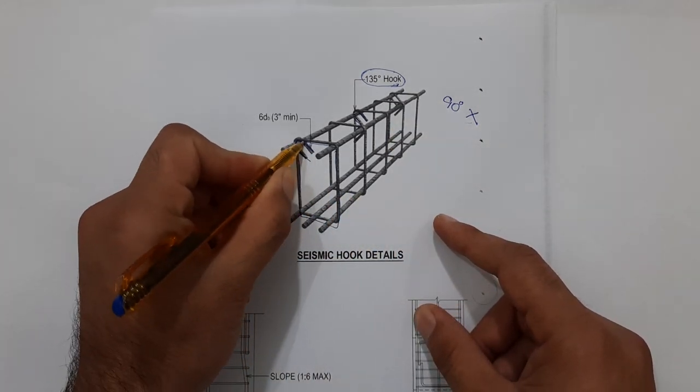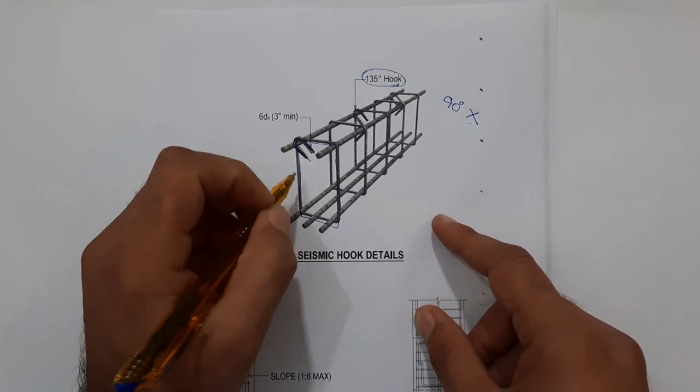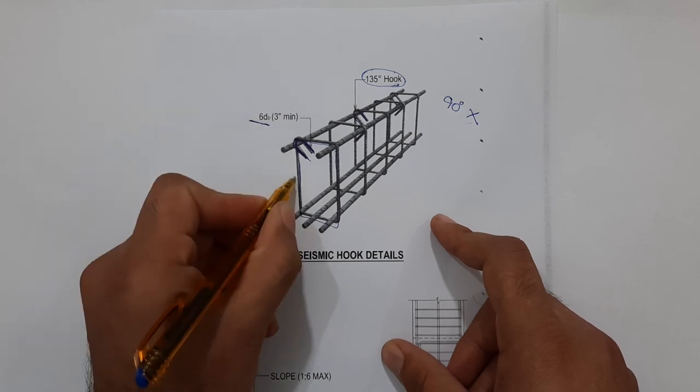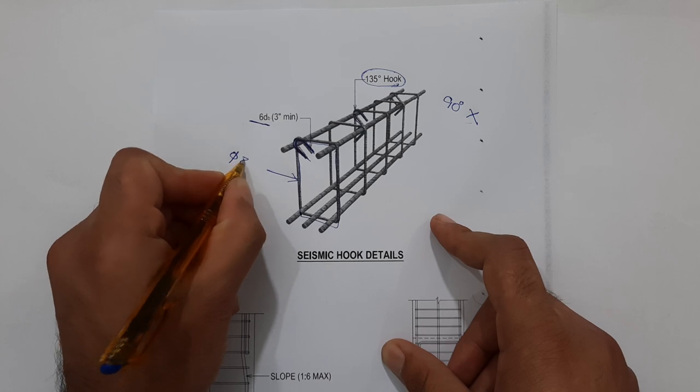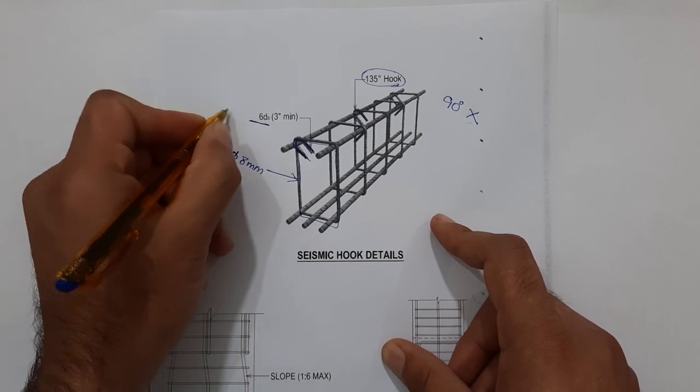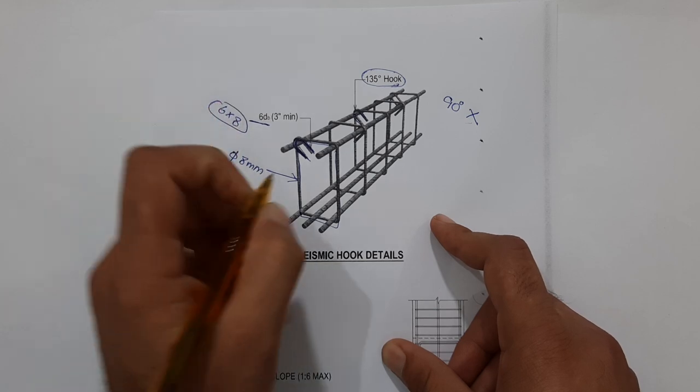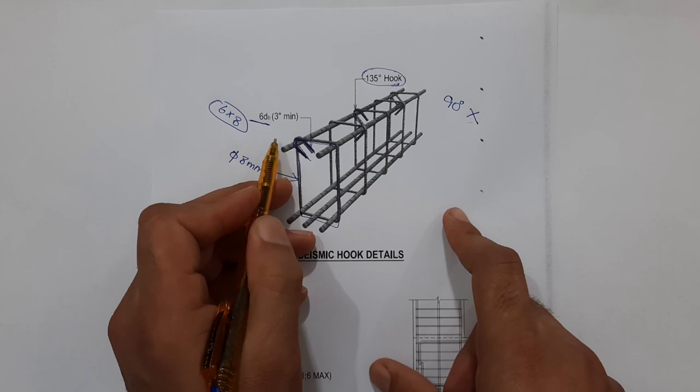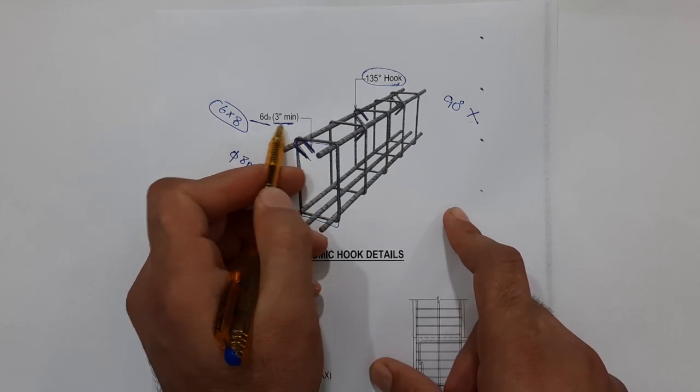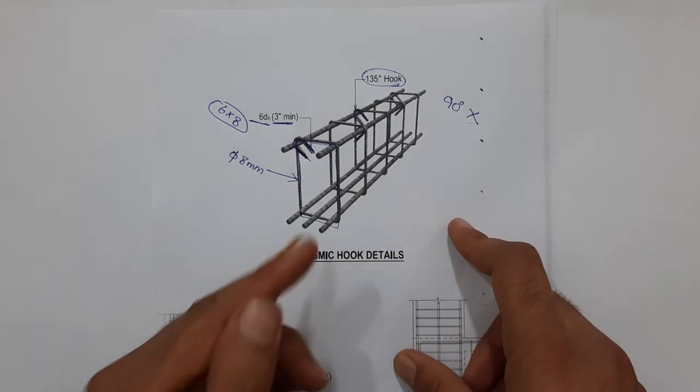Next, what should be the length of hooks? The length of hooks should be 6d, where d is the diameter of stirrup. For example, if the diameter of stirrup is 8 millimeters, multiply 6 by 8 millimeters to get the hook length. But the hook length should not be less than 3 inches minimum.